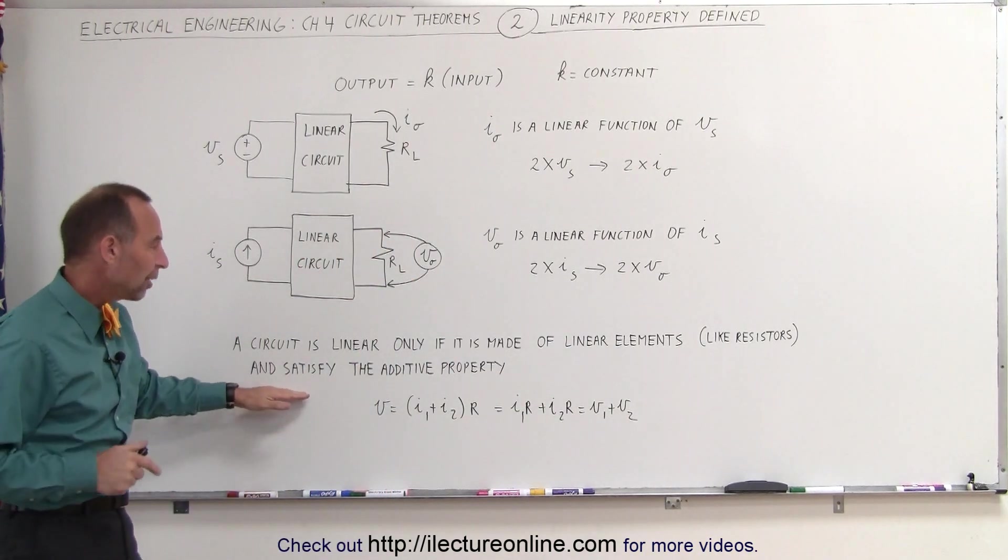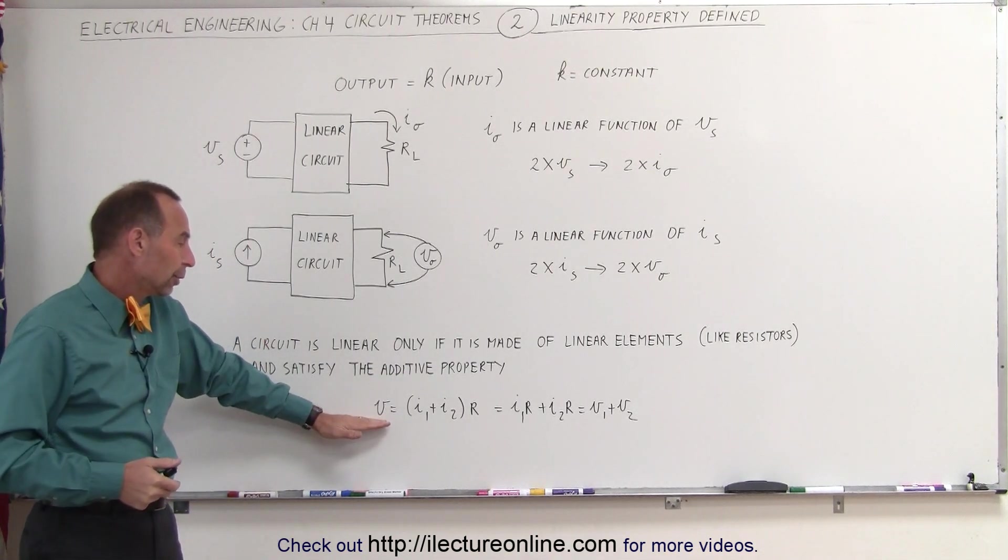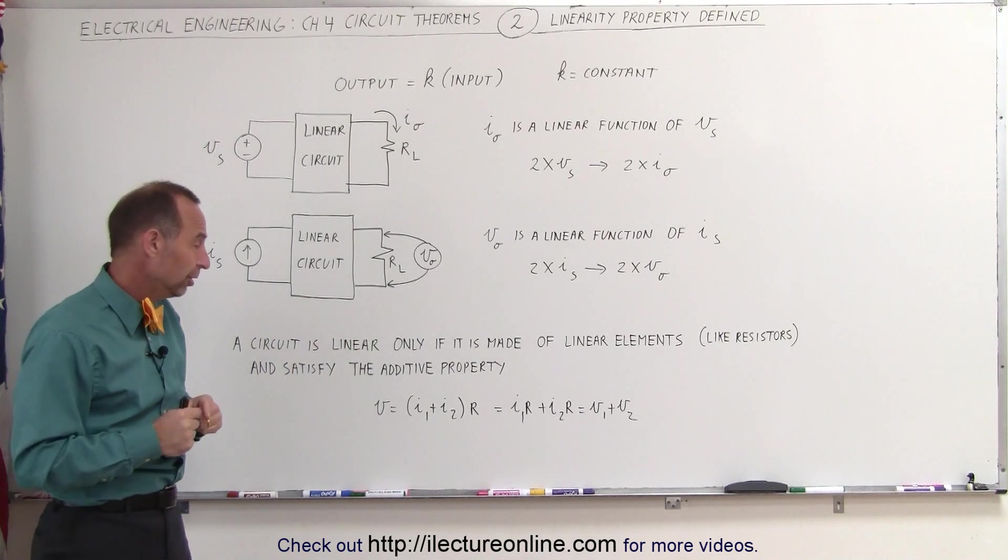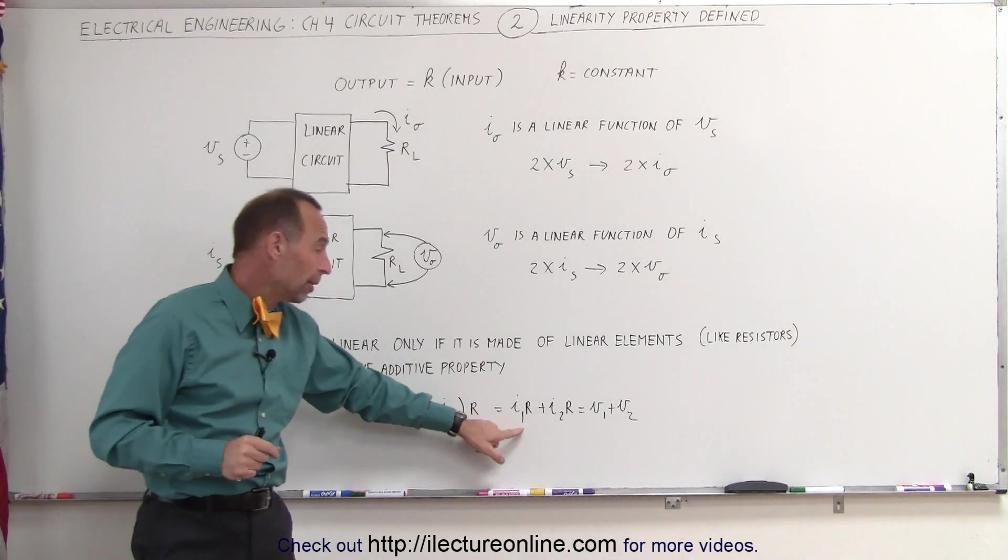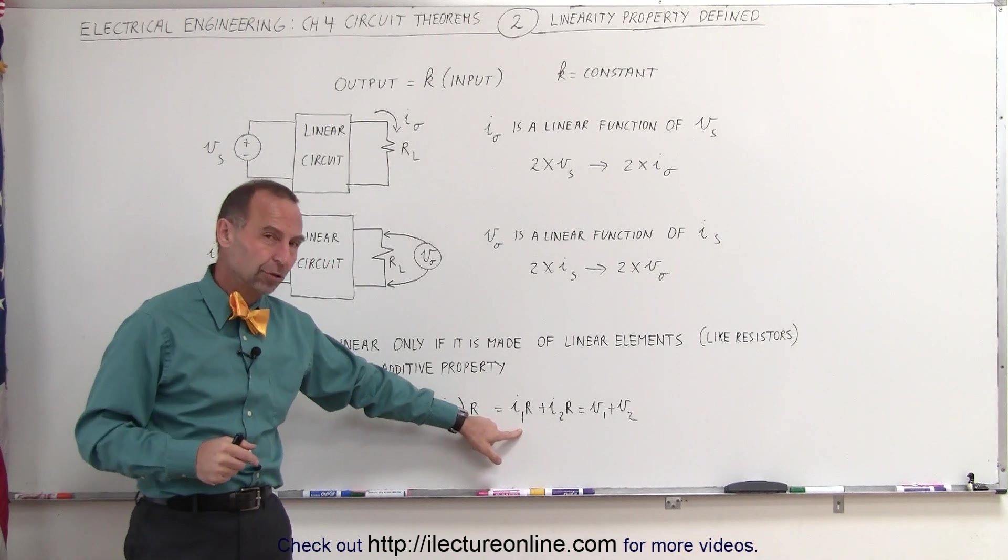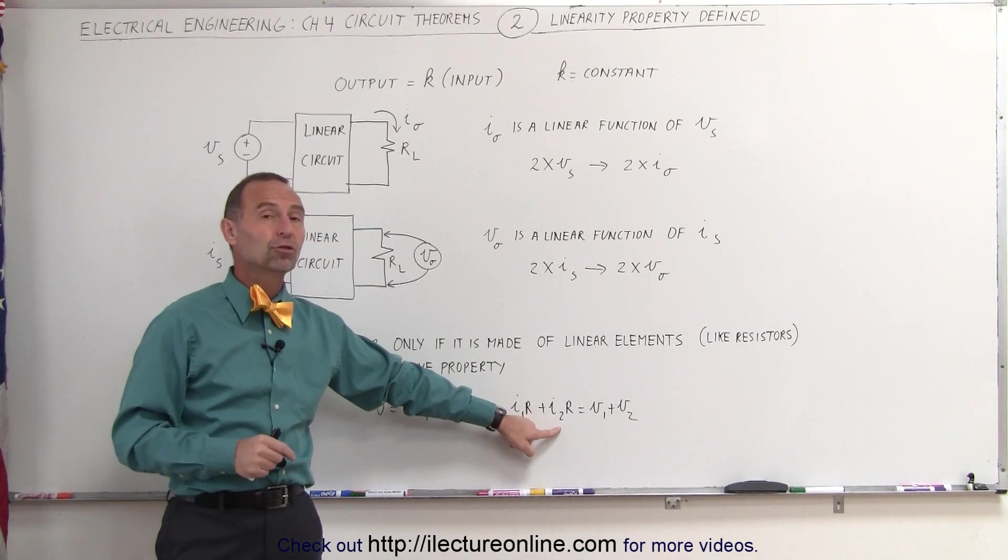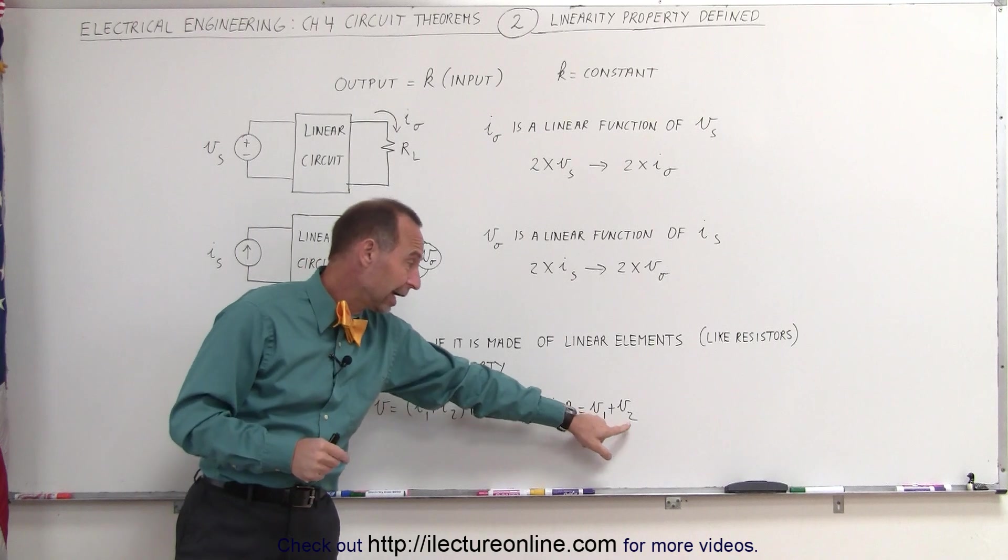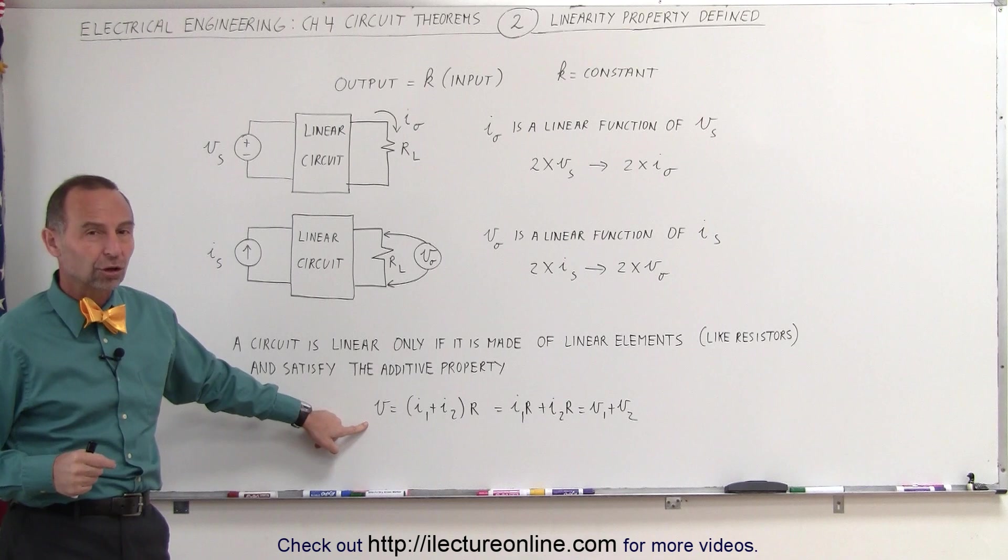Linear circuits must also satisfy what we call the additive property. If we have two separate currents being driven through a resistor, then the voltage across the resistor must be the sum of the contributions of each current—the contribution caused by the first current plus the contribution caused by the second current. If that's the case, then we have a linear circuit.